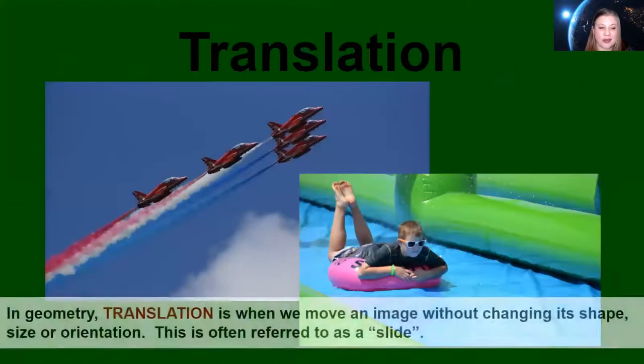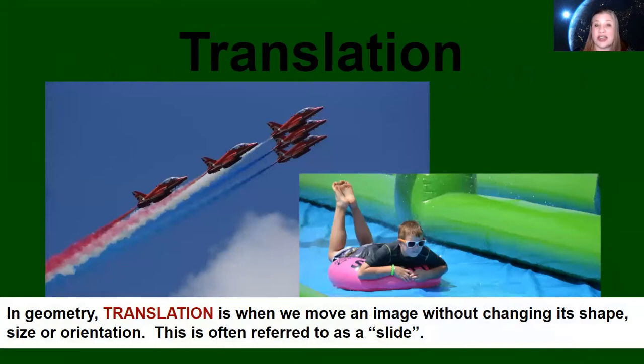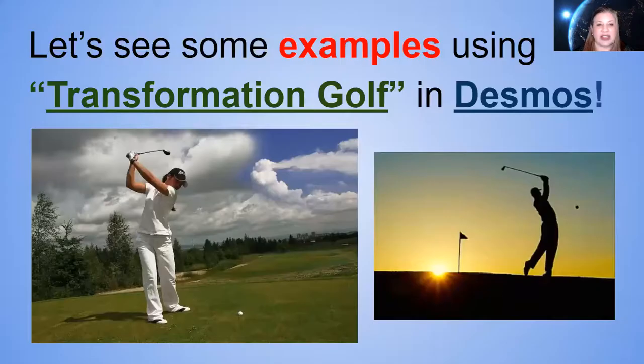And finally we have translation. In geometry translation is when we move an image without changing its shape, size, or orientation. This is often referred to as a slide because that's really what we're doing. We're taking the shape, we're not changing it, we're just sliding it. Moving it in any direction we want to go but we're not changing the shape, size, or orientation.